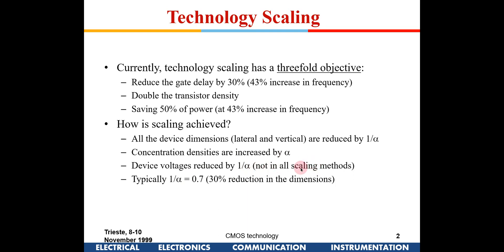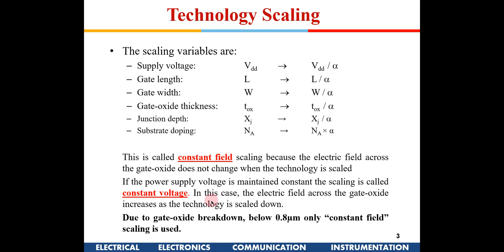Device voltages are reduced by 1/α in constant field scaling; this is not done in all scaling methods. In constant electric field scaling, we reduce the voltage by a factor of 1/α. For each generation, 1/α is approximately 0.7, meaning α is around 1.43, so every time we reduce the device size by approximately 30%.